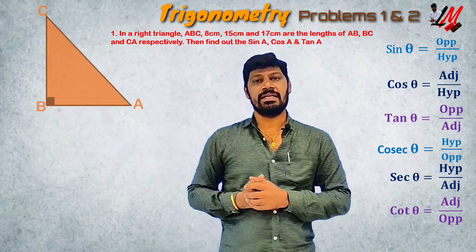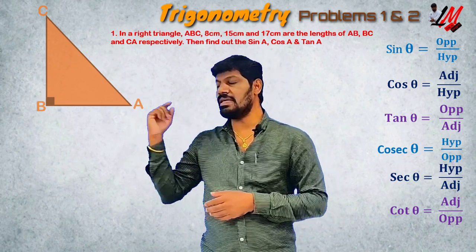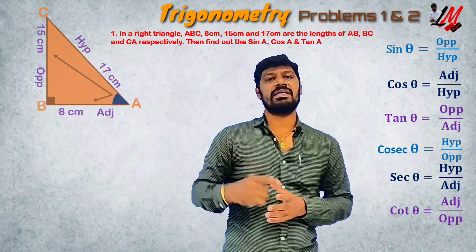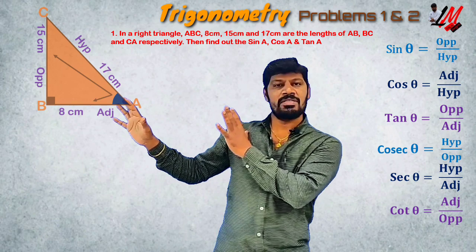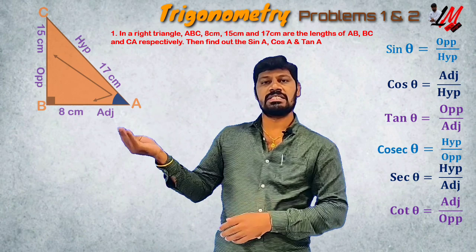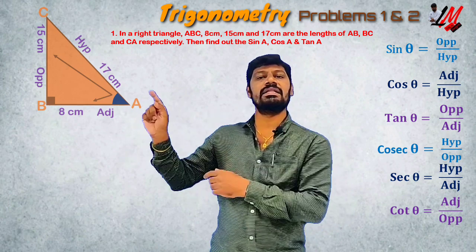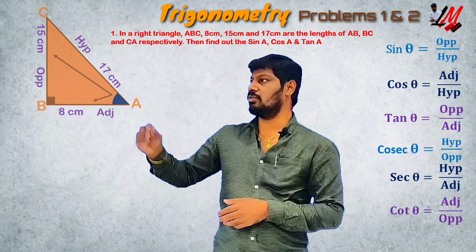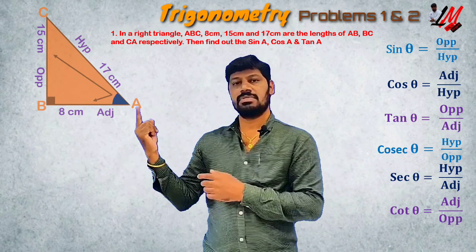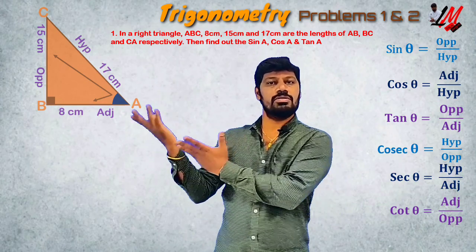Angle B is 90 degrees in triangle ABC. It is given that AB is 8, BC is 15, and AC is 17.